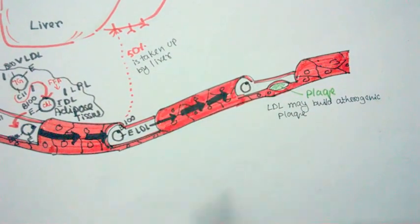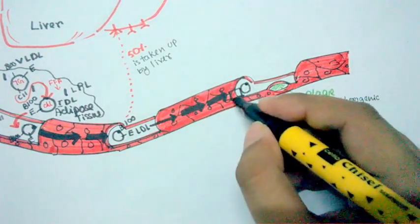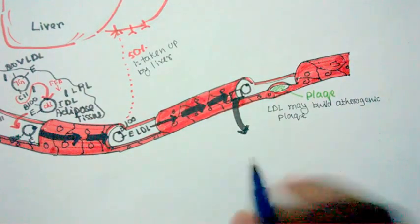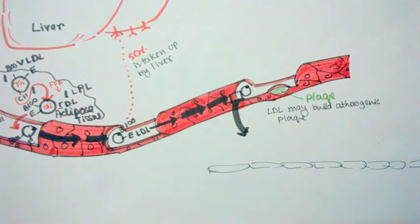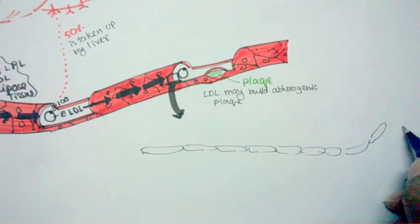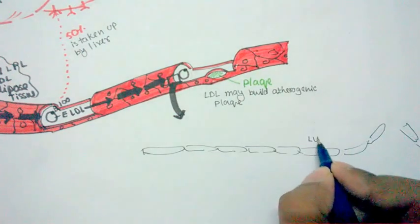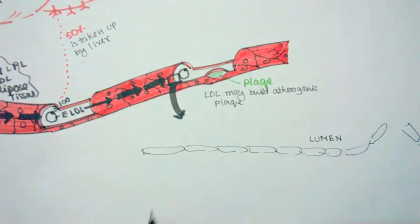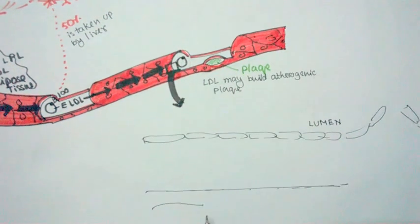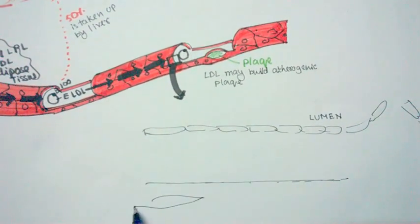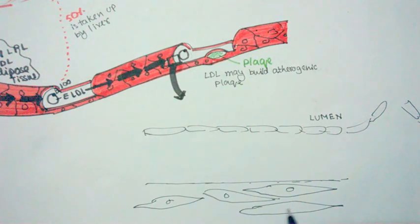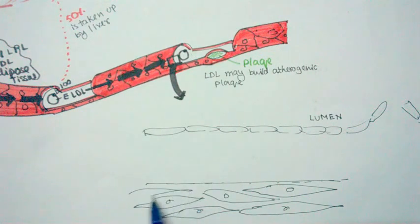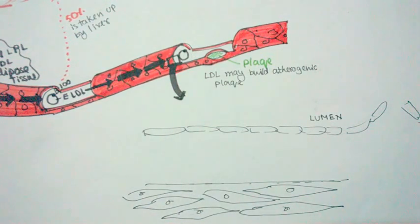Now let's see how this plaque actually forms. If we zoom into an area of a particular artery, we find a lot of endothelial cells lining the arterial wall. Here is the lumen, and after the endothelial cells is the sub-endothelial space, followed by a smooth muscular layer composed of smooth muscle cells.